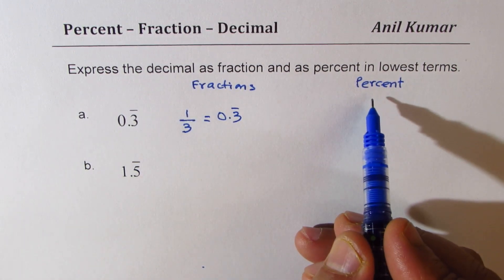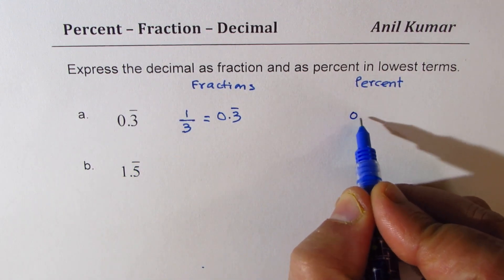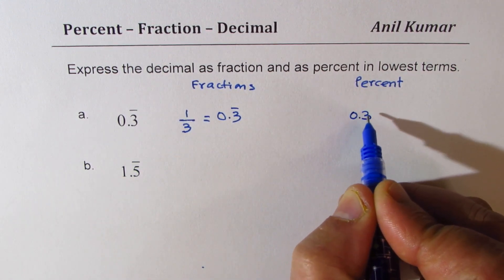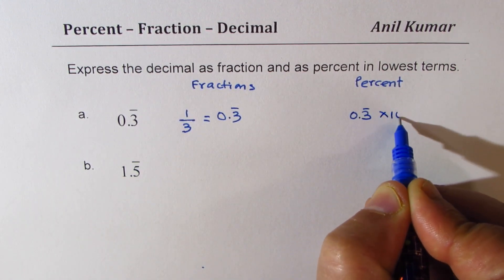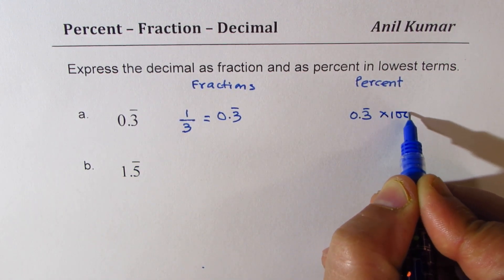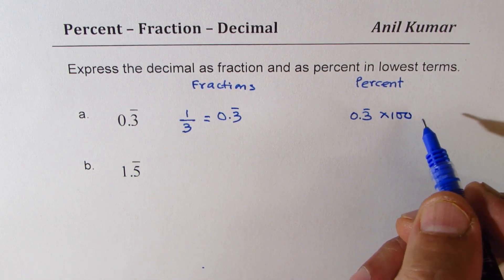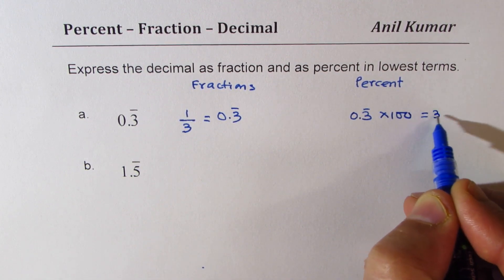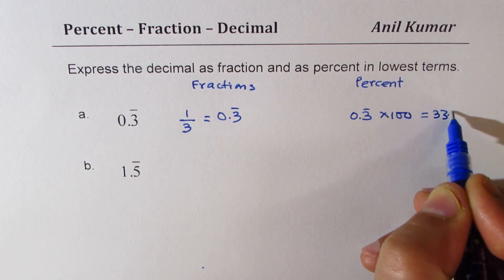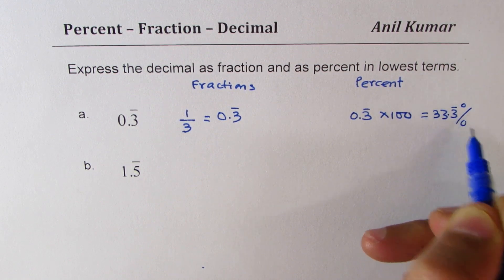As far as percent is concerned, we just need to multiply by 100 to get our percent. So we get 33.3 recurring as percent.